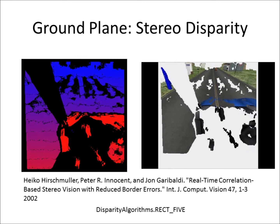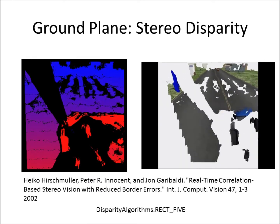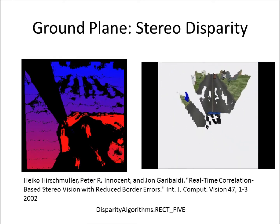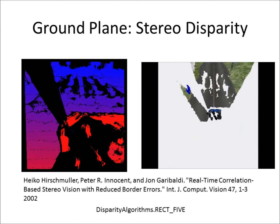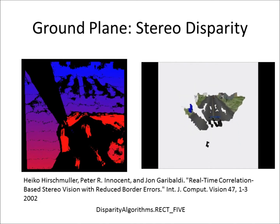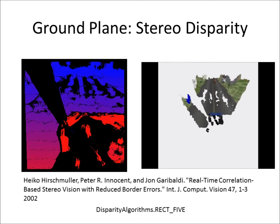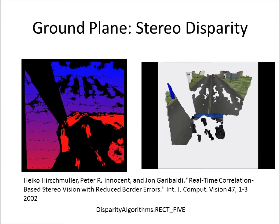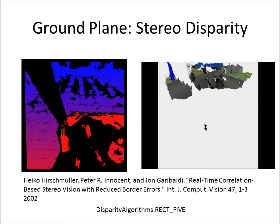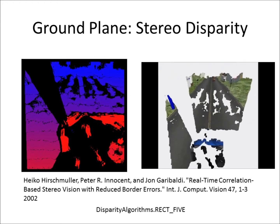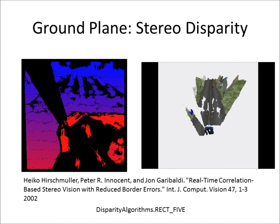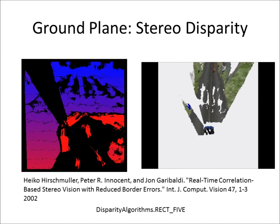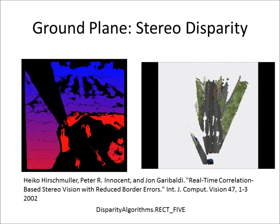The end result of dense stereo processing is shown here. The left image is a disparity image where warmer colors indicate that an object is closer to the camera. On the right is a video showing the colorized point cloud from different points of view. Disparity was computed using an implementation of Hirschmuller's 2002 paper, which reduces errors along object borders.